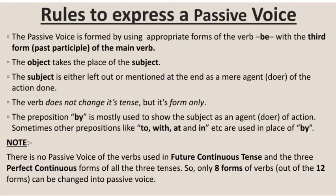There is an important thing to keep in mind: there is no passive voice for verbs used in future continuous tense, and the three perfect continuous forms of all three tenses — past, present, and future — also cannot be changed. So only eight forms of verbs can be changed out of twelve. They are: simple present, present continuous, present perfect, simple past, past continuous, past perfect, simple future, and future perfect tense.